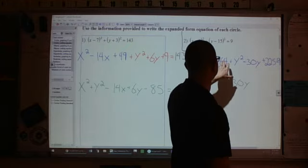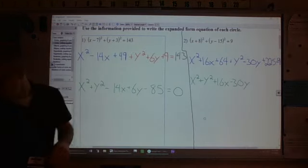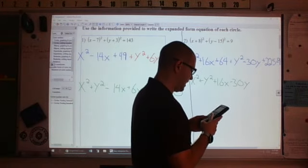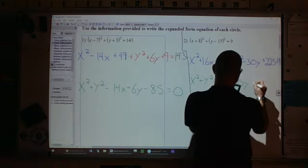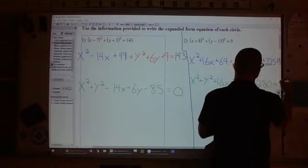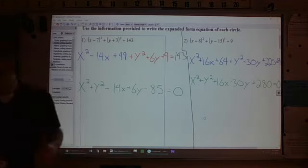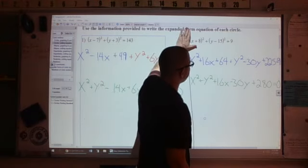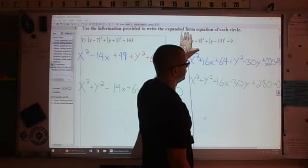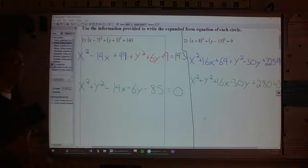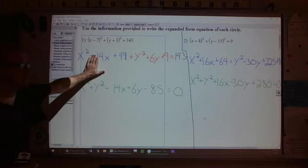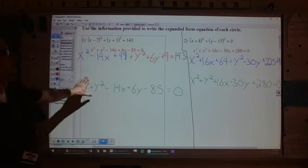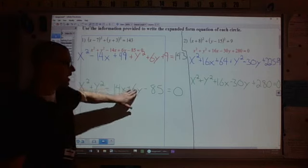I could have edited the video so you didn't see that, but I want it to be authentic, so you get to see that mistake anyway. But on this one, we have the 16x, the 30y, so now it's the 64, the 225, and the 9 that are like terms we want to combine. So 64 plus 225 minus 9 ends up giving us 280, plus 280. We got it right second time on this one, first time.